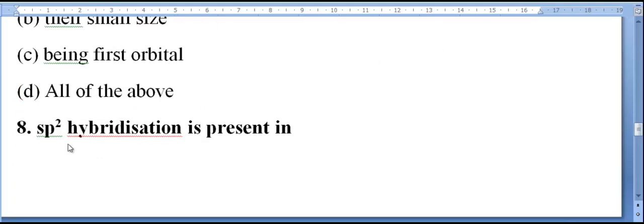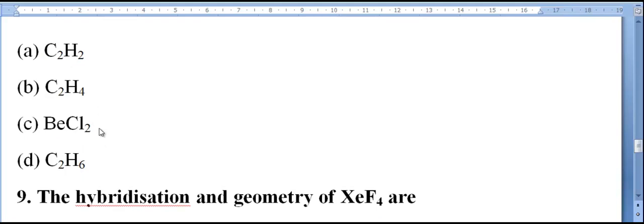The next one, my dear students. SP2 hybridization is present in: one option C2H2, that is ethyne. Two option, ethylene C2H4. Three option, beryllium chloride. Four option, ethane. SP2 hybridization is present in the B option, it is C2H4.